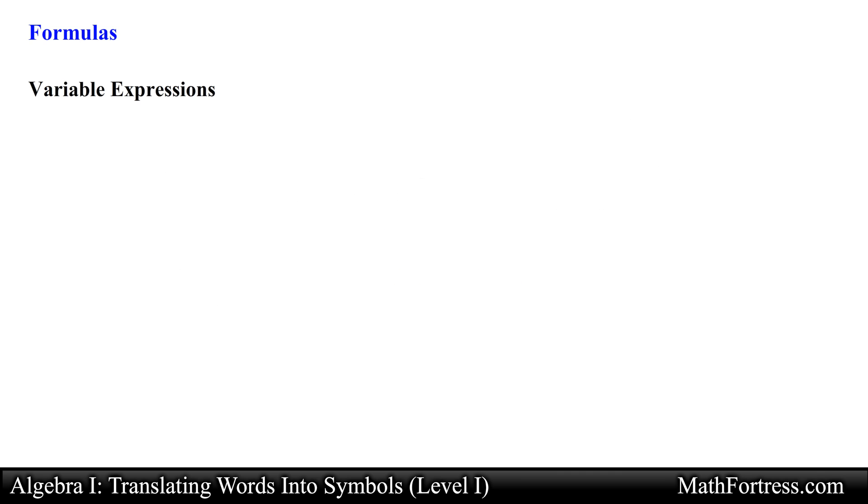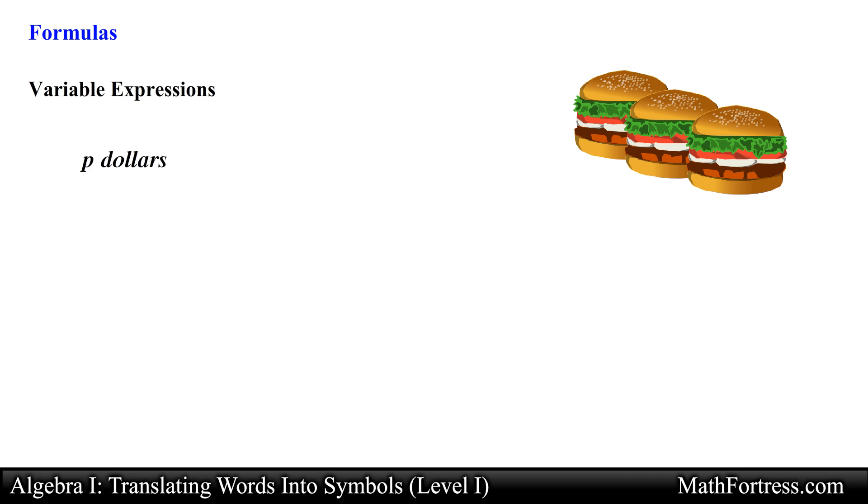Let's do one more example using the cost formula. Say that you decided to buy 3 hamburgers and each one costs P dollars. What is the total cost of your purchase? So to find the cost we take the number of items in this case 3 and multiply it by the price per item which is equal to P. So the final answer is 3P.